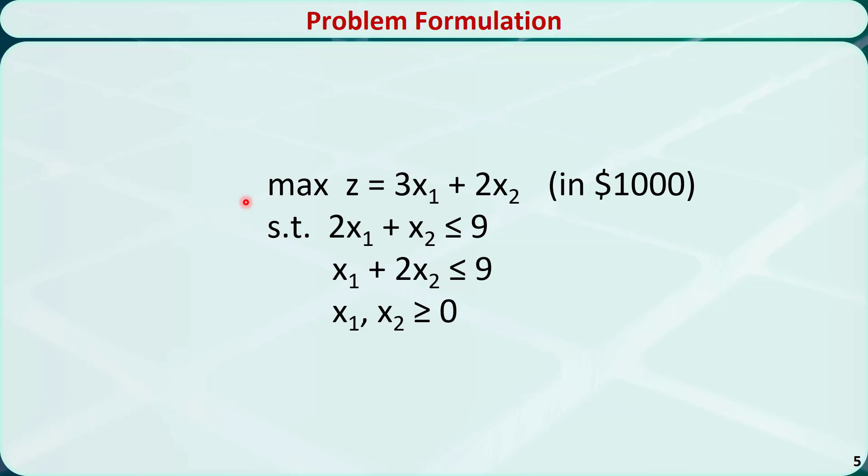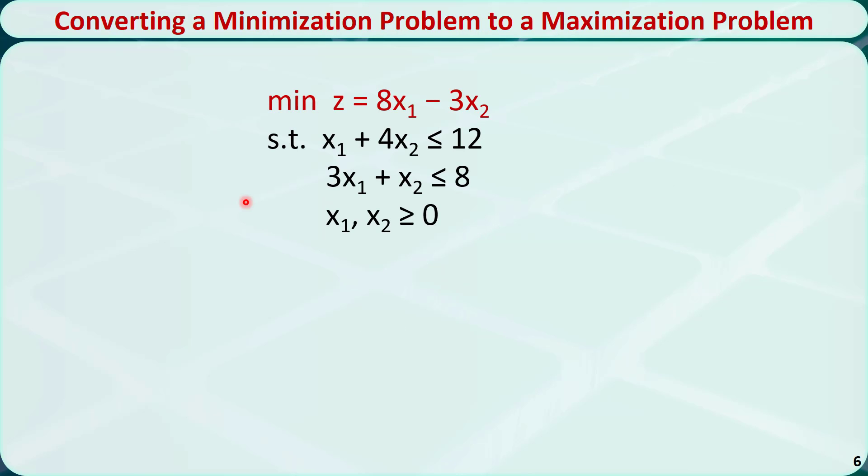If we have a minimization problem, we can convert it to a maximization problem by taking the opposite of the objective function. For example, if this is a minimization problem, min is short for minimize. We can take the opposite of z and give it to y. Now we can maximize y and it is a maximization problem. There is no change in the constraints or sign restrictions.